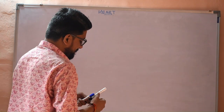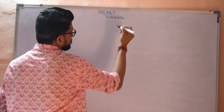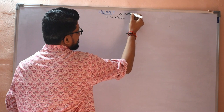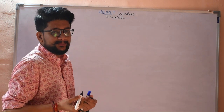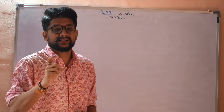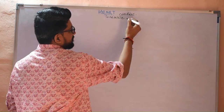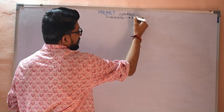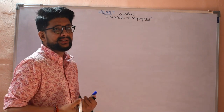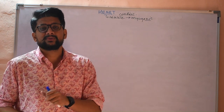When we say heart, it is basically a structure which is made up of muscle — a special muscle known as cardiac muscle. There are different types of muscles in our body, but the most special type is cardiac muscle, and that cardiac muscle makes up our heart. As the structure is made up of cardiac muscle, its nature is myogenic in nature. Myogenic in nature means if a structure is made up of muscle, it is myogenic in nature.